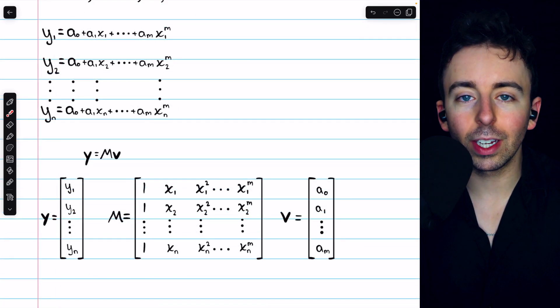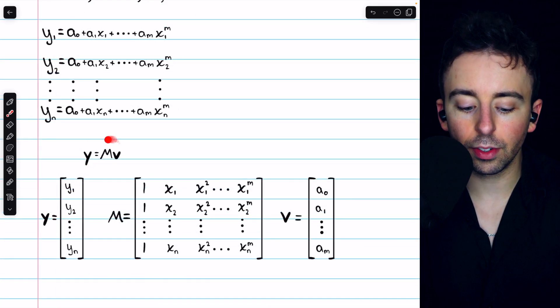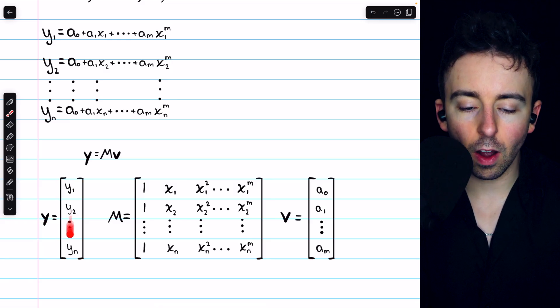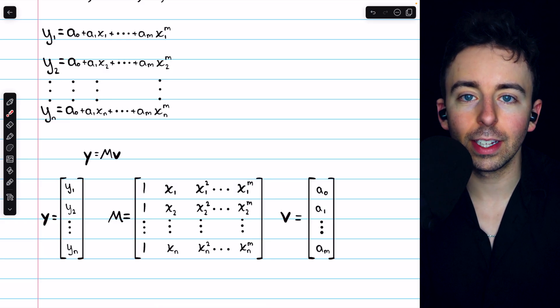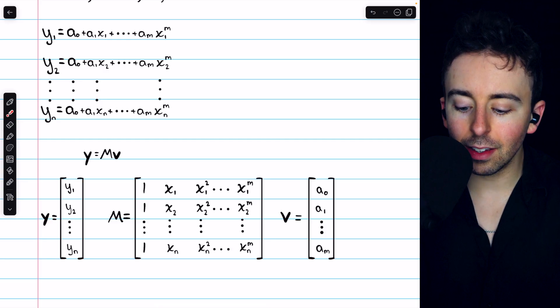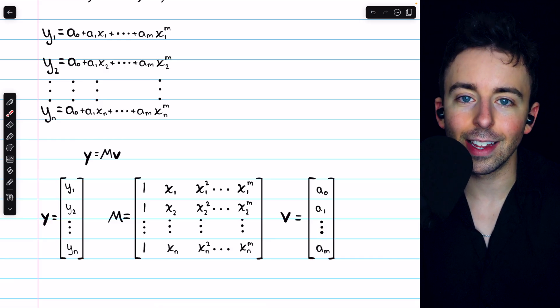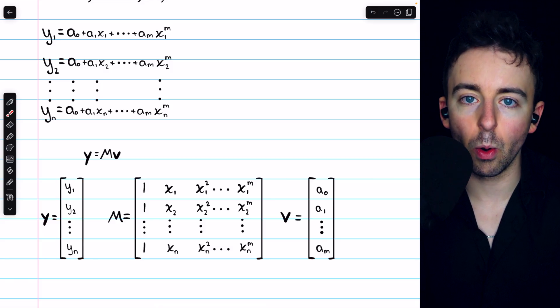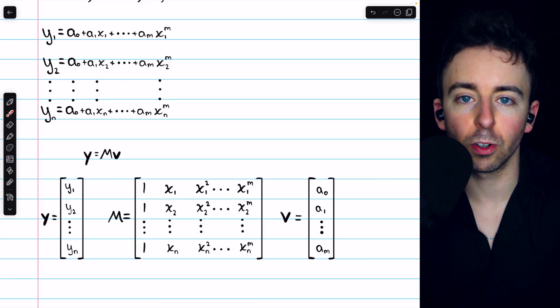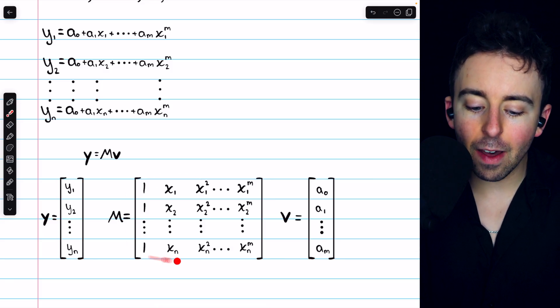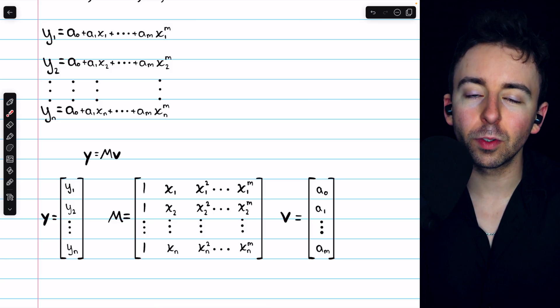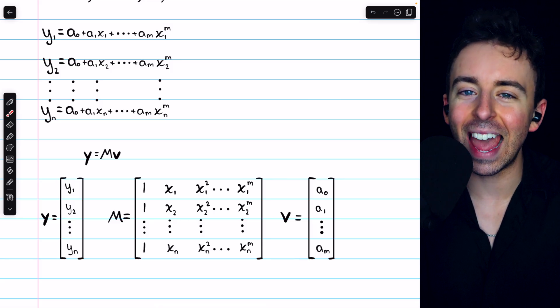And we can write this in the more condensed form y equals Mv. Y is the column vector of y coordinates from the known data points. V is the column vector of the unknown coefficients, a0 through a_M, the coefficients of the polynomial that we're trying to find. And M is the matrix of coefficients of the a's.